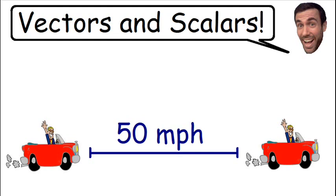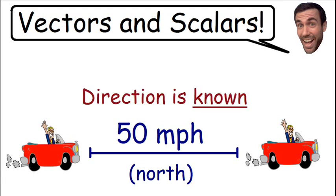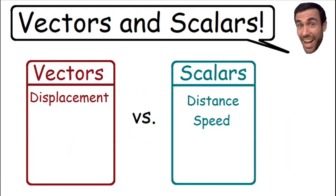But let's say for example that the car is traveling 50 miles per hour to the north. In this example we do know the magnitude of how fast it's going and we know the direction it's going to the north. This is what we call velocity. Velocity is a vector quantity because we have a magnitude and we have a direction.